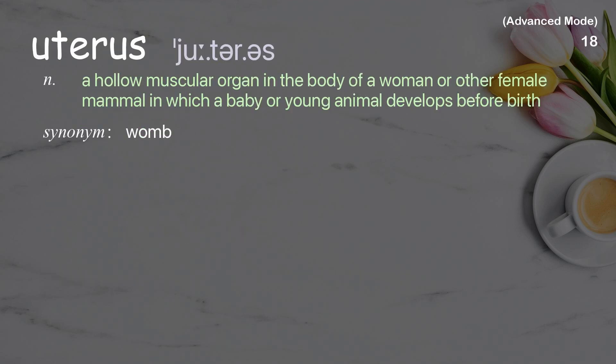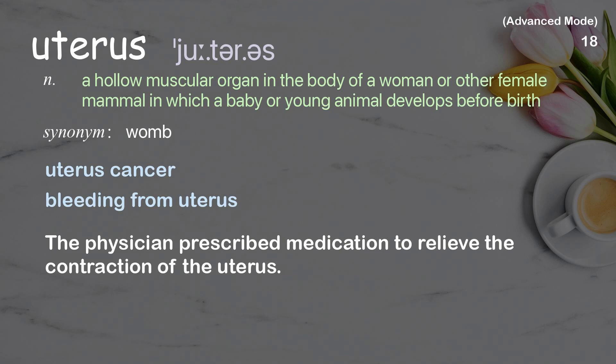Uterus: a hollow muscular organ in the body of a woman or other female mammal, in which a baby, or young animal, develops before birth. Examples: uterus cancer, bleeding from uterus. The physician prescribed medication to relieve the contraction of the uterus.